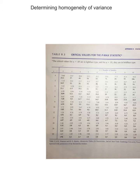Determining homogeneity of variance. We're going to use this table — Table B3 in your textbook, or you can just Google 'F-max table F-max statistic.' This is going to help us find our F-crit, the critical value of F that can be checked before running an actual analysis.